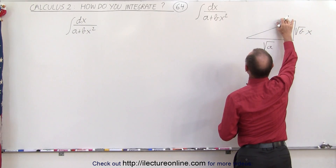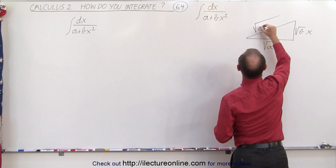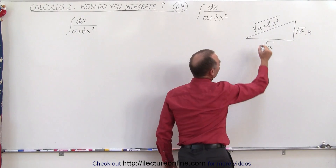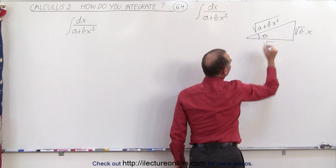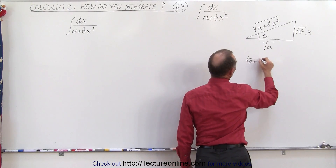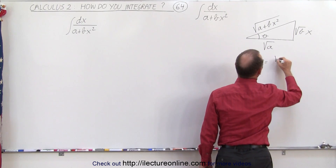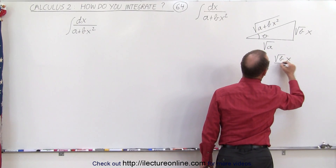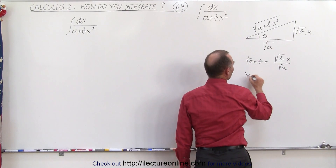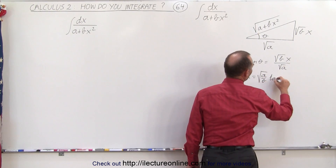The hypotenuse will simply be the square root of the sum of the squares, which would be a plus bx squared. Now, using that relationship, let's call this angle here theta. We can see that the tangent of theta, by definition, is the opposite side over the adjacent side — that would be the square root of bx over the square root of a — which means that x can be written as the square root of a over b times the tangent of theta.